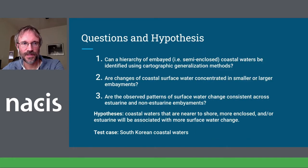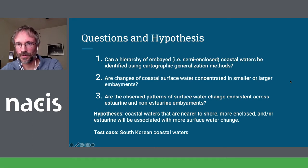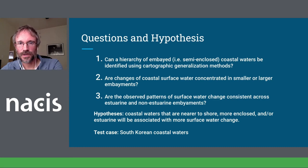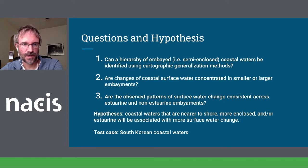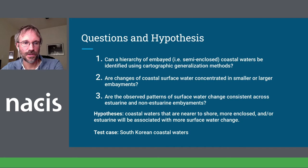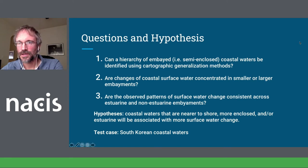This led us to develop some specific questions and hypotheses. Our first question was: can a hierarchy of embayed semi-enclosed coastal waters be identified using cartographic generalization methods? Second, are changes of coastal surface water concentrated in smaller or larger embayments — more or less enclosed areas? And third, are the observed patterns of surface water change consistent across estuarine and non-estuarine embayments? We hypothesized that coastal waters that are nearer to shore, more enclosed, and more estuarine will be associated with more surface water change. As a test case, we considered surface waters in the South Korea area.